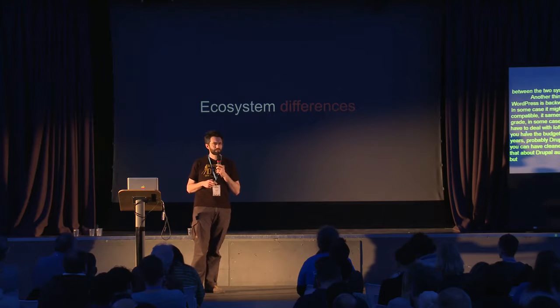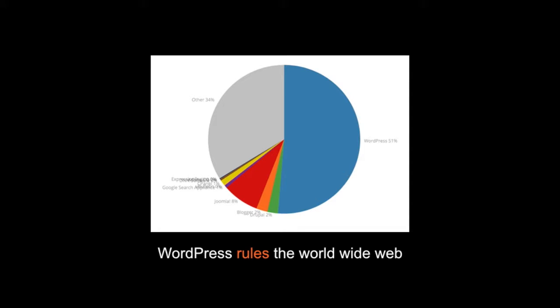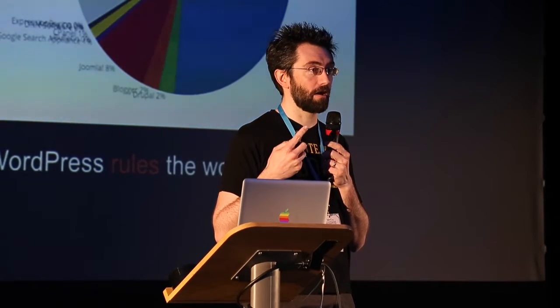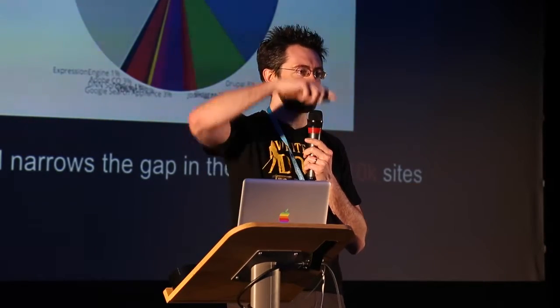There are also really big differences between the two ecosystems. According to builtwith.com, WordPress worldwide has more than 50% of all sites that run a CMS — which is insane. Drupal has about 2%, which is tiny. But if you look at the top 100,000 or top 10,000 websites, WordPress still dominates, but the gap is a lot smaller. Drupal has about 8% if you look at the top tier of websites, and that has a few implications.